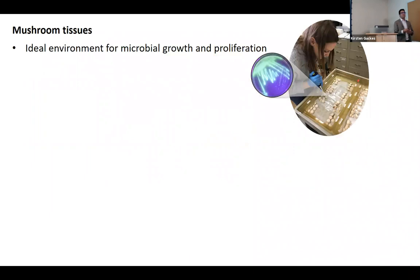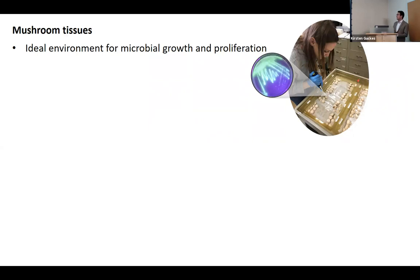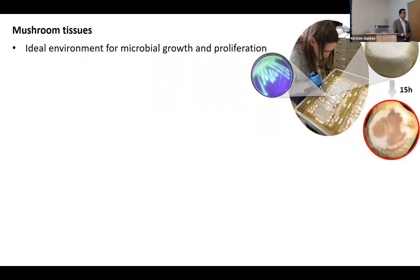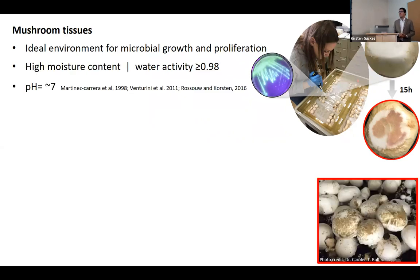One reason mushrooms are very susceptible to bacteria is that the mushroom itself is a very ideal environment for microbial growth and proliferation. We do a lot of pathogenicity tests — for example, if you add 10 microliters of a bacterial solution carrying the pathogen, within 15 hours you can see a reaction. It's really fast. Mushroom has a high moisture content, water activity close to one, and a near-neutral pH that favors bacterial proliferation.